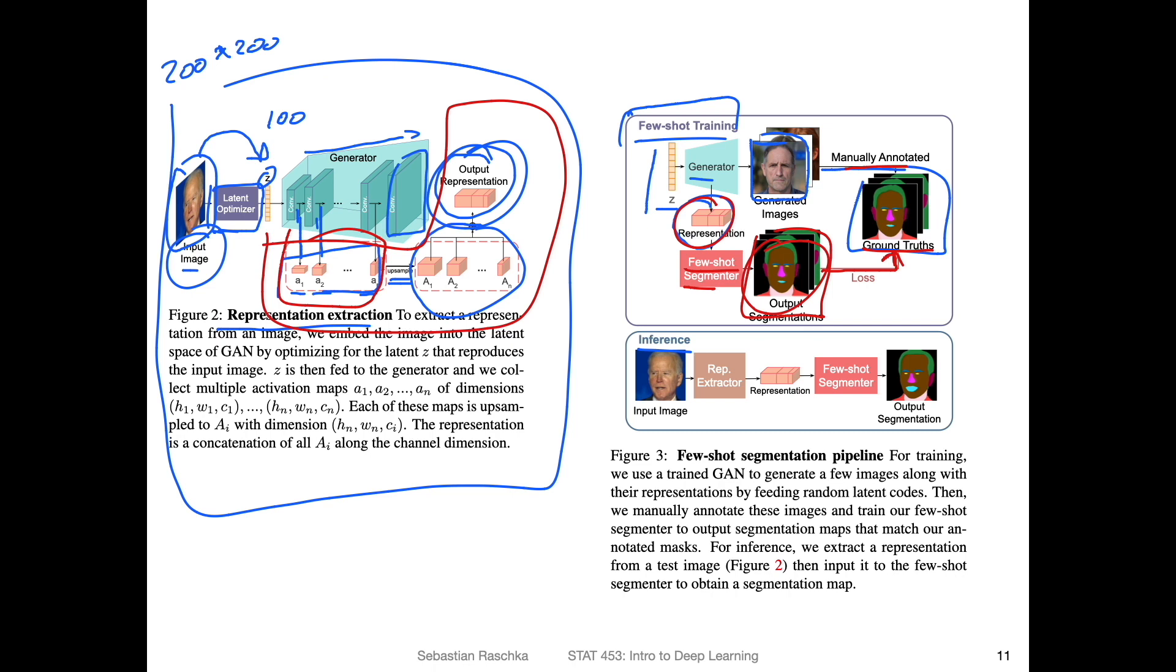And then during inference, you can take a given input image, run it through the representation extractor, and then run this few-shot segmenter to get the output segmentation map. So in that way, what you can do is you can essentially run this part for inference to get the segmentation map for any new image. I think that's actually a pretty cool project.